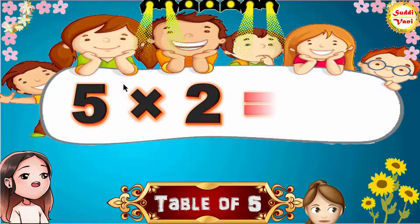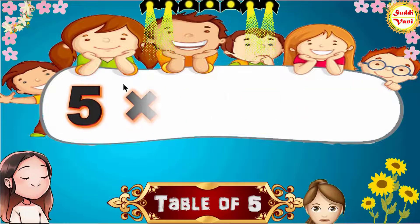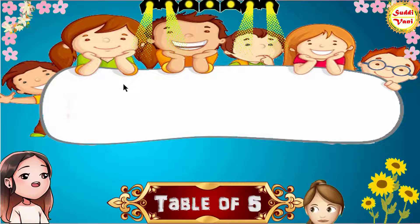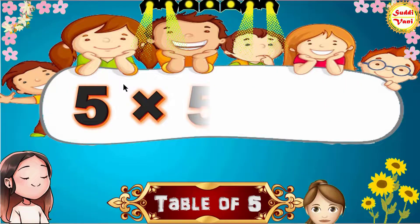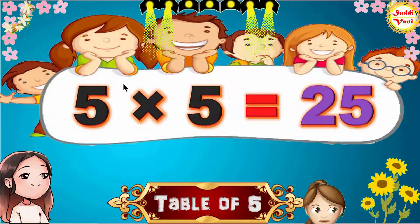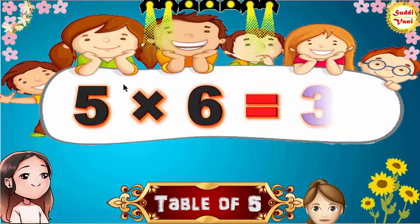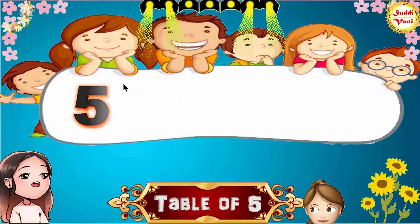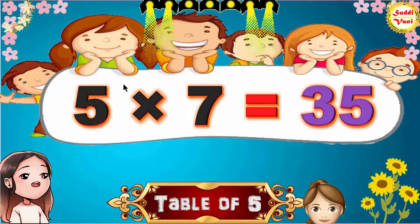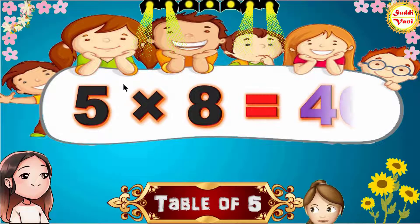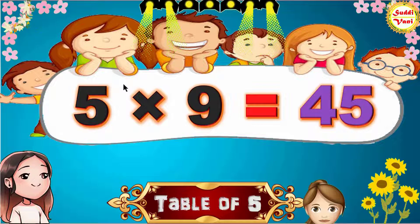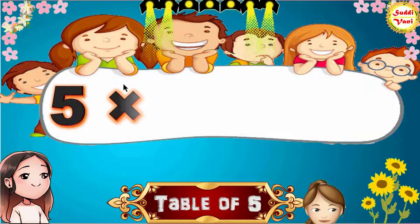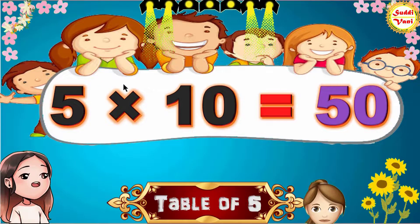5 2s are 10, 5 3s are 15, 5 4s are 20, 5 5s are 25, 5 6s are 30, 5 7s are 35, 5 8s are 40, 5 9s are 45, 5 10s are 50.